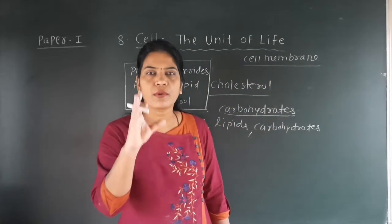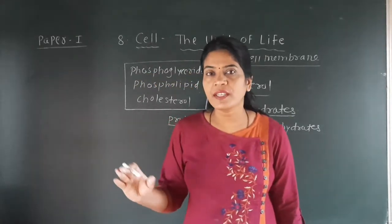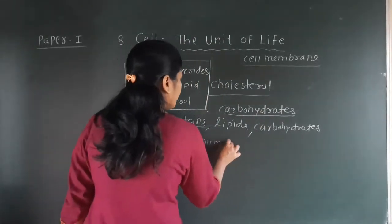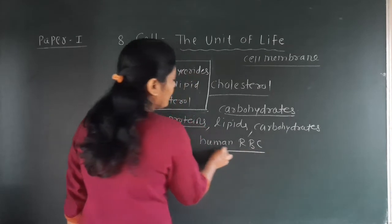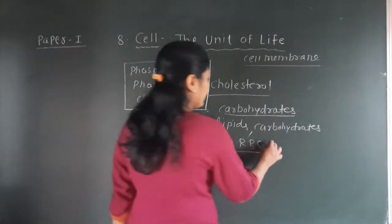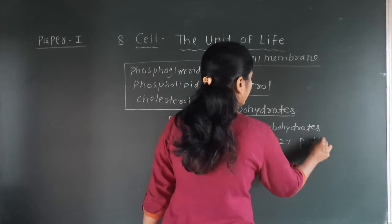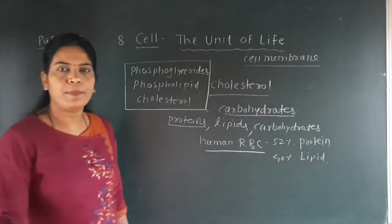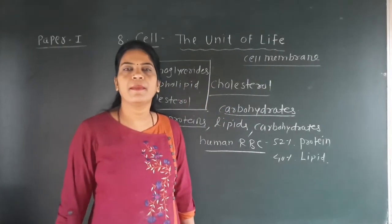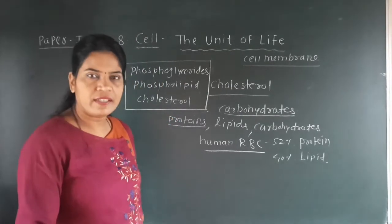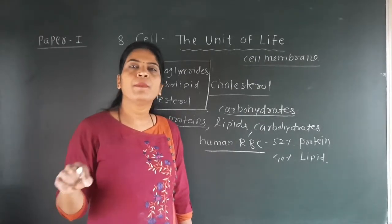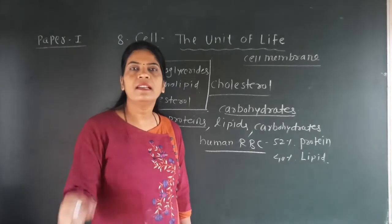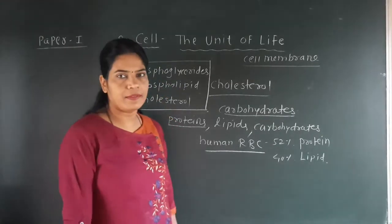The percentage of lipid and protein present in the cell membrane is variable. If we look at the human RBC, we find that 52% is protein and 40% is lipid. So the composition — the majority of protein or lipid — varies depending on the cell type.